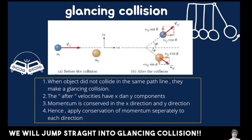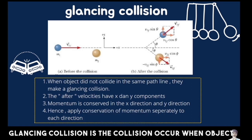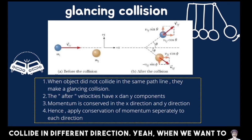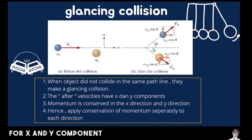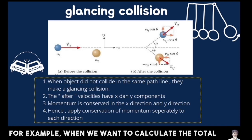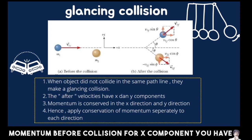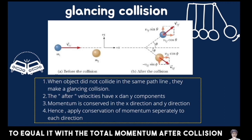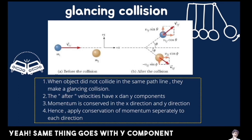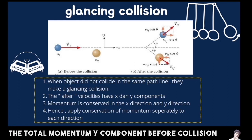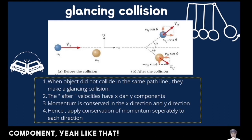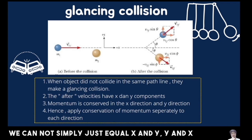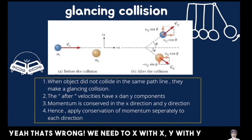Next, we will look at glancing collision. Glancing collision occurs when objects collide in different directions. When calculating the total momentum before and after collision, we need to consider it separately for the X and Y components. The total momentum of the X component before collision equals the total momentum of the X component after collision, and the same applies to the Y component. We cannot equate X with Y or Y with X — X must be matched with X, and Y with Y.